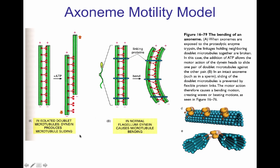There are multiple models for the way in which the axoneme makes the microtubule move. Part of the axoneme components are the linking proteins that keep the microtubule doublets tethered together. If we digest those proteins and add ATP to a pair of microtubules from the axoneme, we see the movement of one doublet towards the negative end, and the other moving towards the positive side — sliding against each other in opposite directions. But when we maintain the linking proteins and add ATP, we end up with bending of the entire structure.